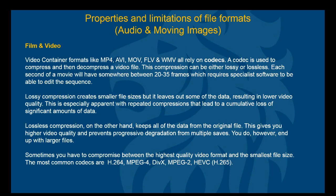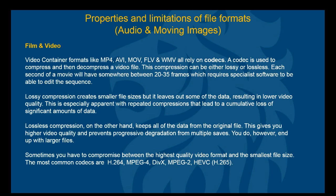Let's have a quick look at stop-frame animation. This is basically taking a number of pictures over a period of time — 720 still photographs in this case — and putting them together. This is effectively how we create any moving image: when we say 30 frames per second in film, that means taking 30 still photographs every second. In stop-frame the images are taken over a greater period of time, but when stitched together and played one after another very quickly, you get the illusion of movement. Let's play those 720 still shots now.